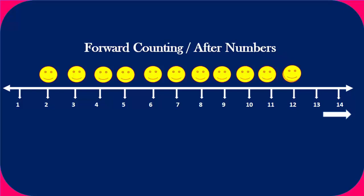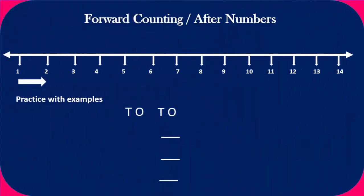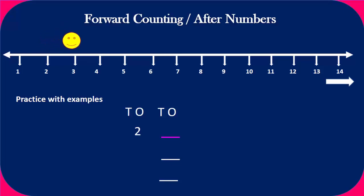Now let us see some examples. Number two — here we can see that there is a blank space after number two. That means we have to go on the right side of the number line. The smiley face is on number two. When we go forward or after, it will come on number three.